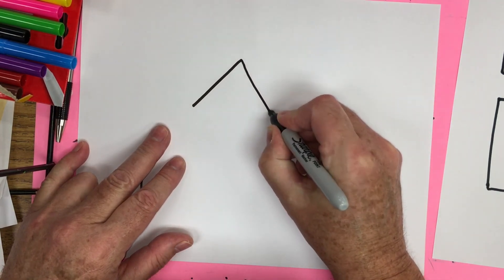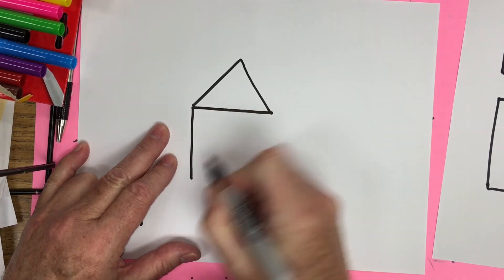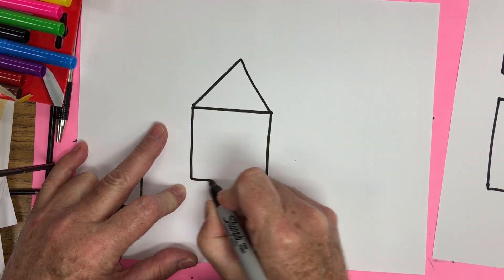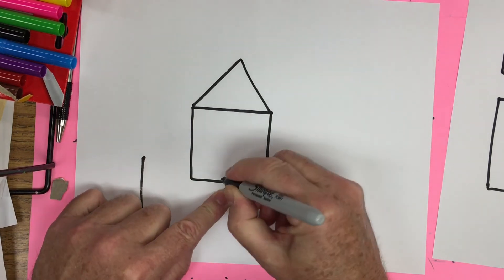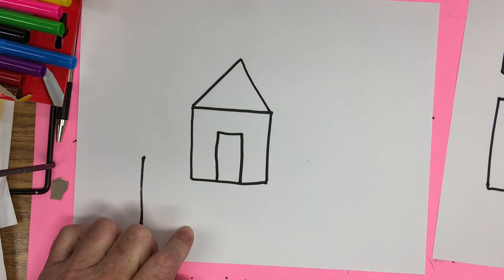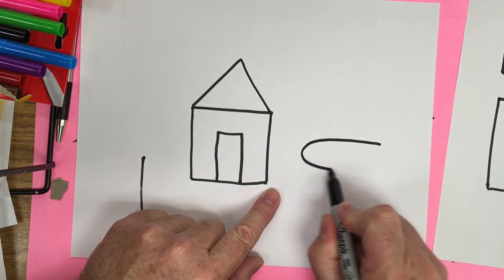And when you draw the shapes, draw them very neatly. Here's my triangle and square. And I can put a rectangle inside for a door.